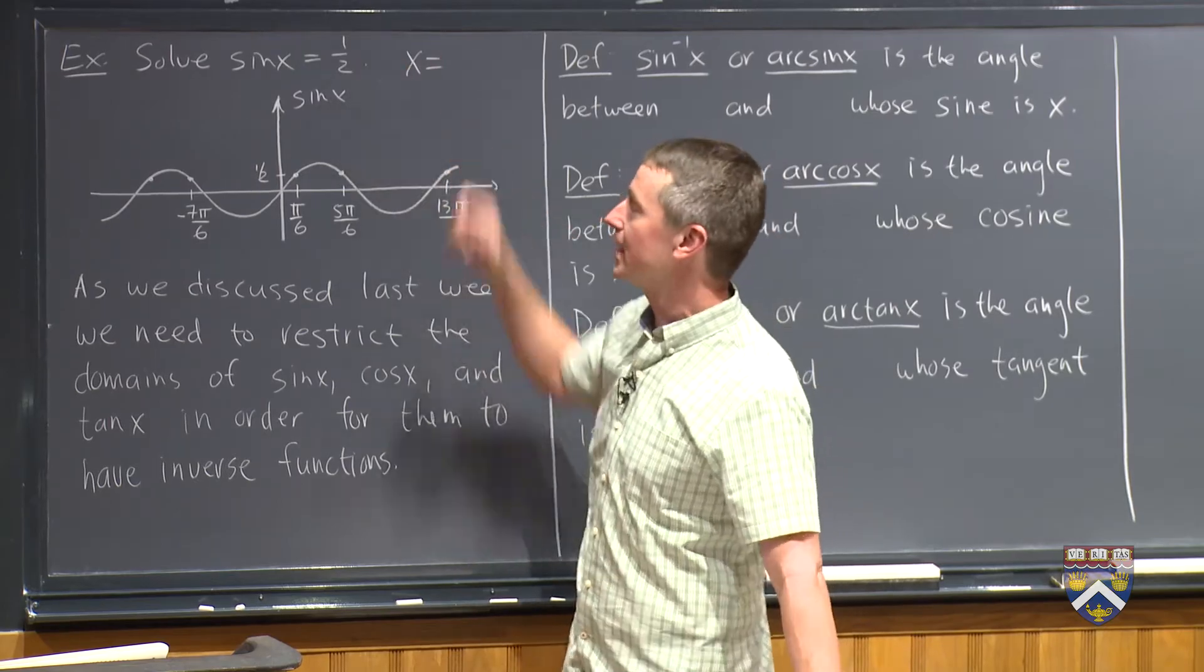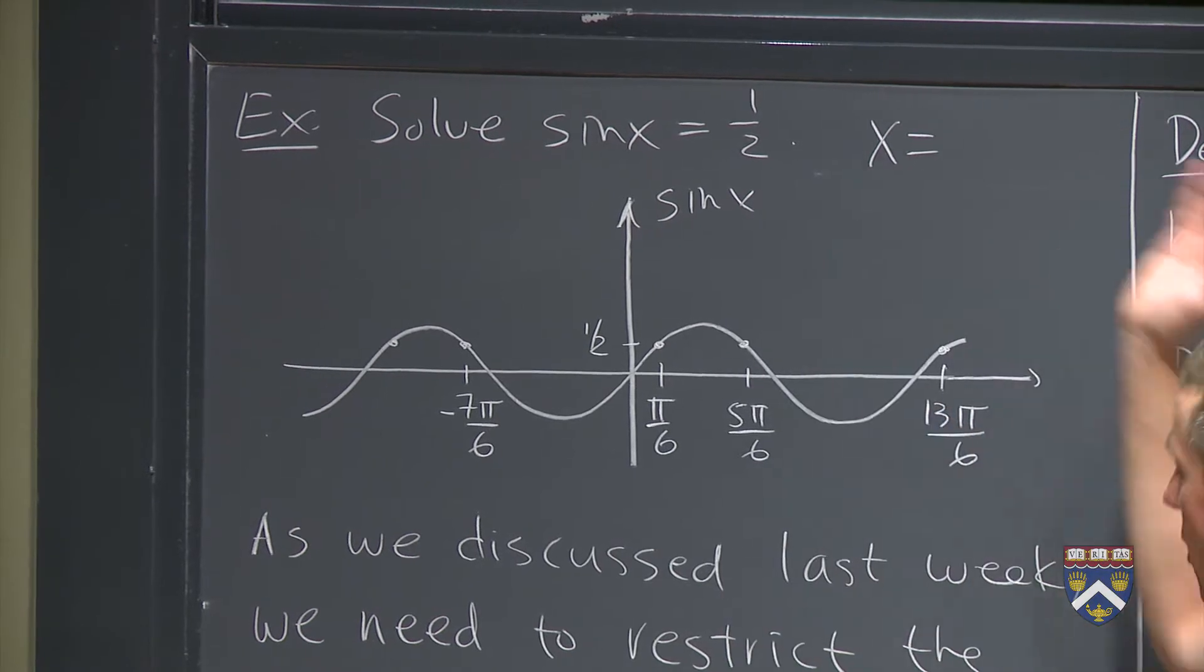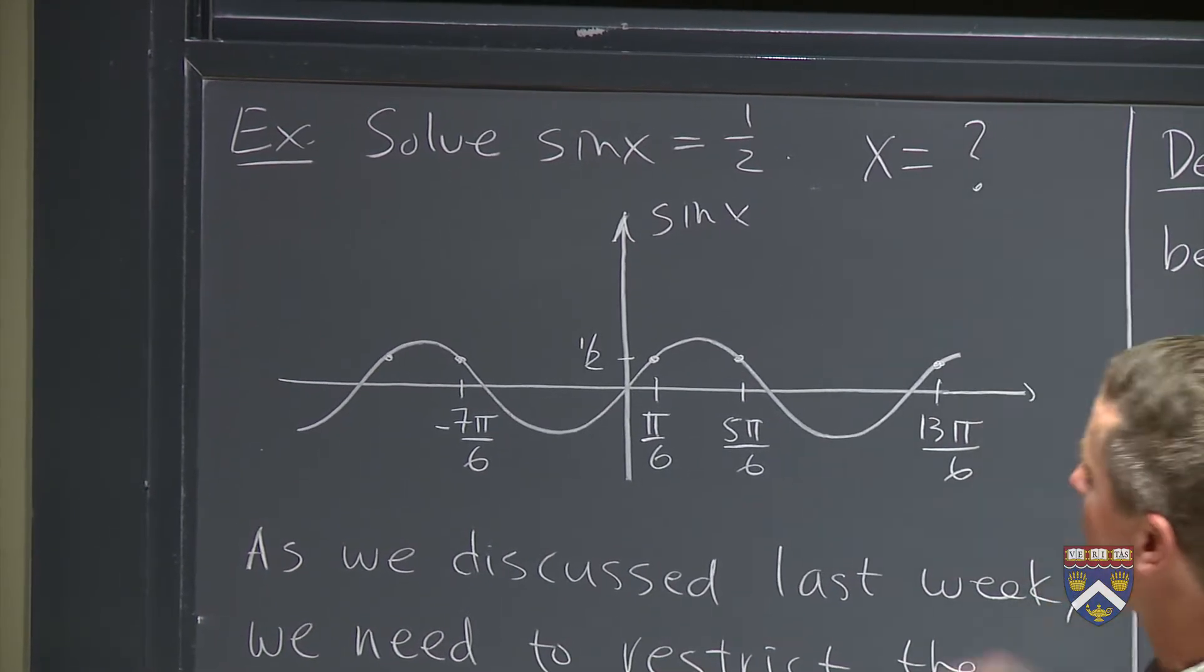And in fact, for this, when we ask what is the inverse sine of a half, they all give the answer of pi over 6, even though there's many different possible answers. So there's going to be infinitely many possible answers here.